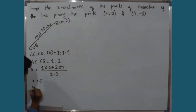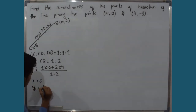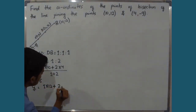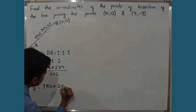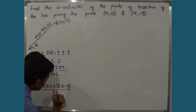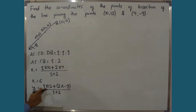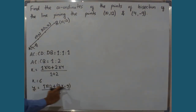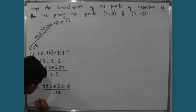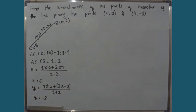Y1 = (1 × 12 + 2 × (−9)) / (1 + 2). 1 × 12 = 12, and 2 × (−9) = −18. So 12 − 18 = −6, and −6 divided by 3 equals −2. Therefore, Y1 = −2.